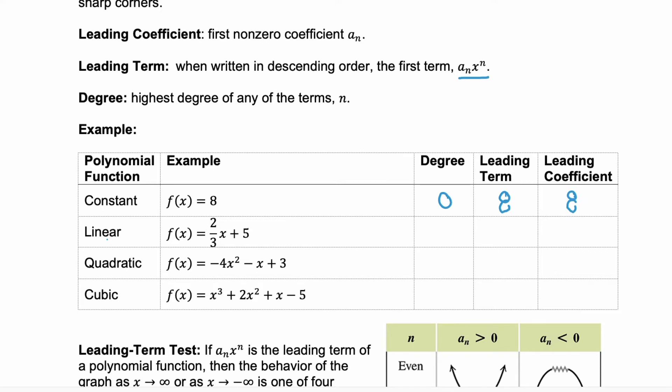Next, we have a linear function, (2/3)x + 5. Notice that it's written in descending order. The degree is 1 because the exponent on the x is 1. The leading term is (2/3)x. The leading coefficient is just the real number part, so it's 2/3.